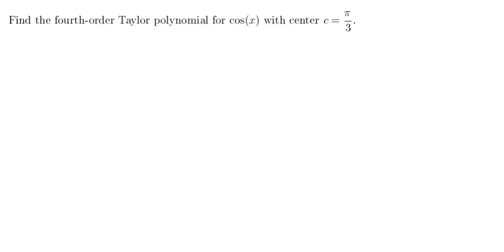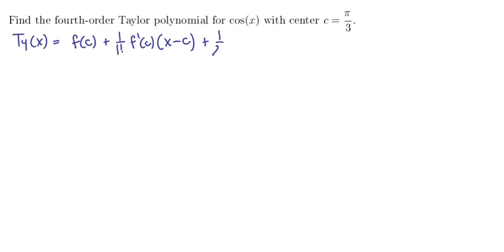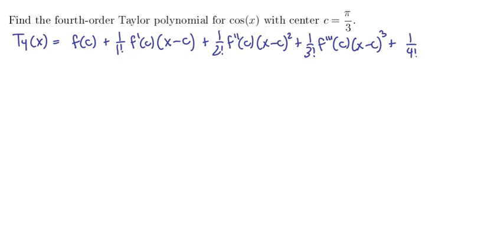Find the fourth-order Taylor polynomial for cosine of x with center c equals pi over 3. Let's start by writing the formula for the fourth-order polynomial: f at the center, plus 1 over 1 factorial times the derivative at the center times (x minus the center), plus 1 over 2 factorial times the second derivative at the center times (x minus the center) squared, plus 1 over 3 factorial times the third derivative times (x minus the center) cubed, plus 1 over 4 factorial times the fourth derivative times (x minus the center) to the fourth power. Our center is pi over 3, so every c in this equation is replaced by pi over 3.